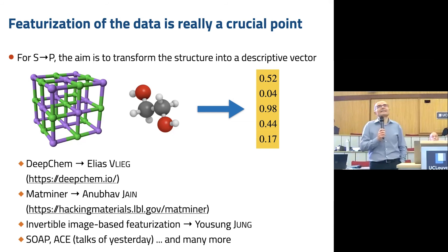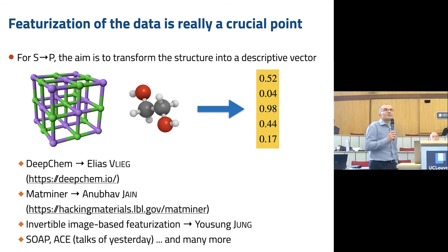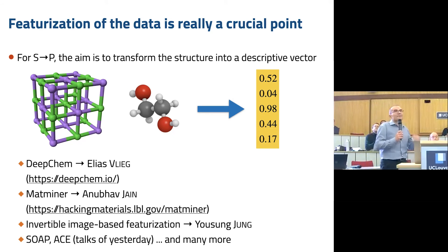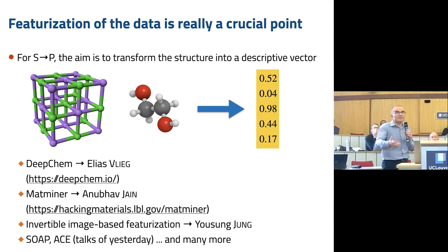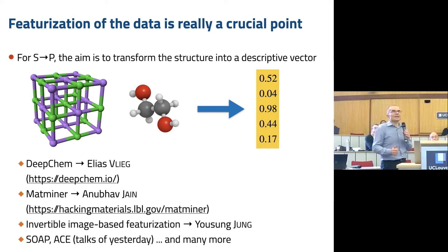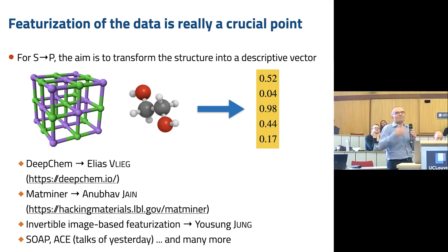We're going to see, in the talk of Yusung Jun — the first speaker — the use of invertible image-based featurization, because it is clear that the field of machine learning developed quite a lot in the field of images. There's a lot of featurization that has already been achieved and studied for different methods as far as images are concerned. In the talks of yesterday, we heard about SOAP, ACE, and there are many more.